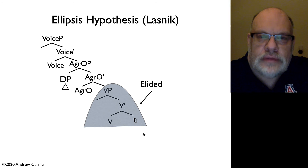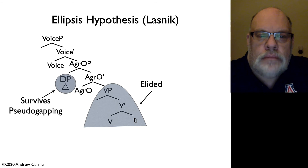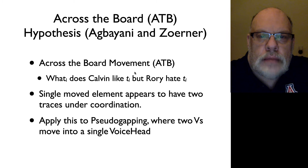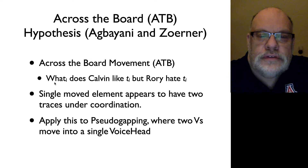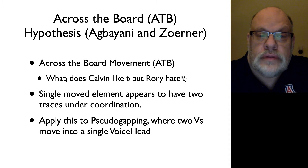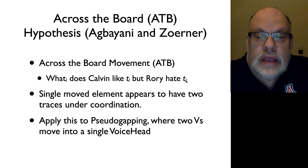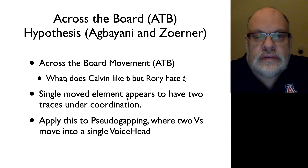I actually think Lasnik's hypothesis is probably the best, but I'd like to raise an alternative — identified by Agbayani and Zorner. They refer to a phenomenon known as across-the-board movement, a very interesting structure we have not looked at previously. It most often shows up in situations involving WH movement, where it appears as if WH movement has two traces — two origin points. For example: 'What does Calvin like but Rory hate?' We've done WH movement from the first clause — Calvin likes what — and also from the second clause — Rory hates what — but we only have a single 'what' word. So a single moved element seems to have two traces under coordination. This is what across-the-board movement is.